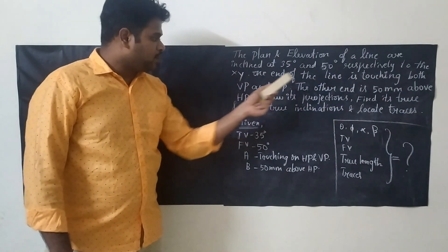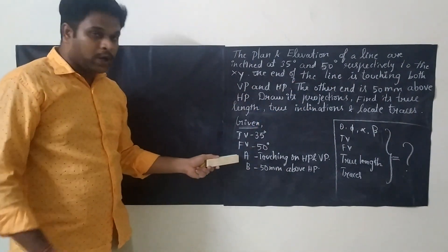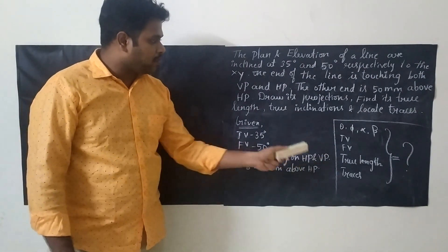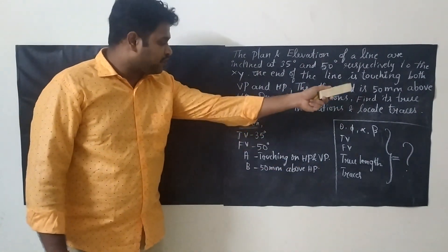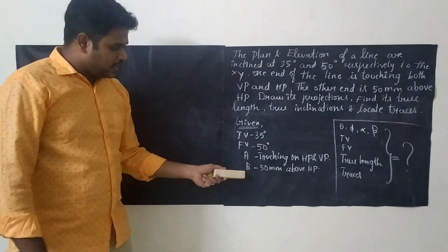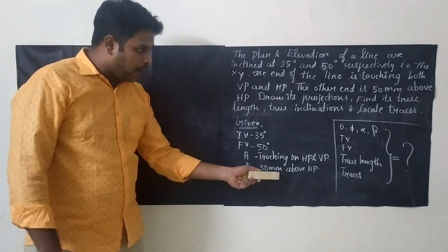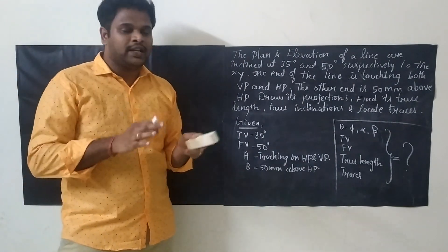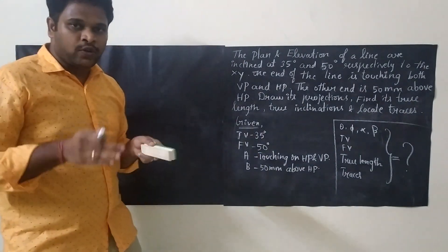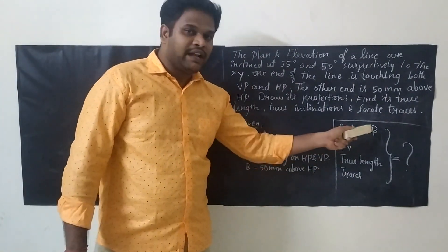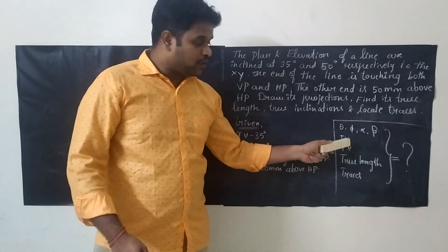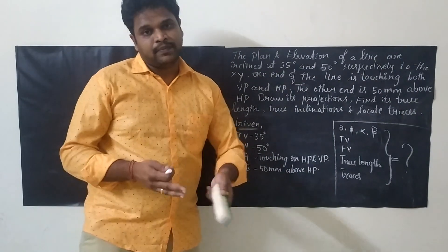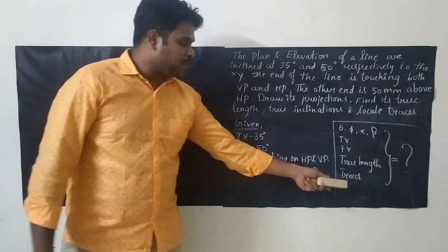One end of the line is touching both VP and HP. So for line AB, point A will be touching on HP and VP. The other end, B, is 50 mm above HP. We need to draw its projection and find the true length. We will be determining theta, phi, alpha, beta, the lengths of the front view, top view, true length, and finally the traces.